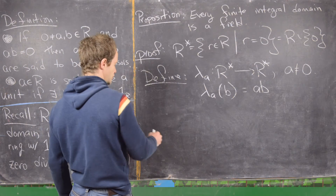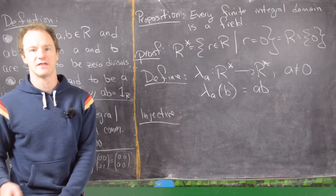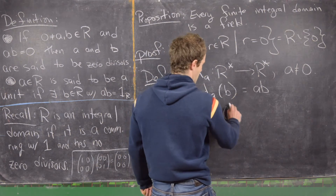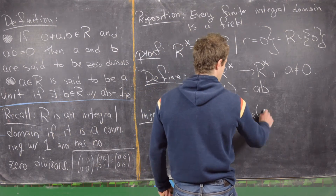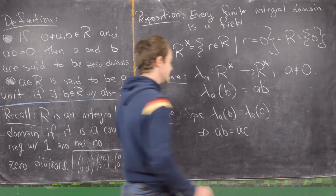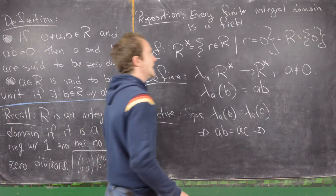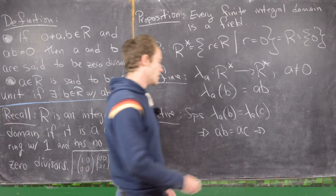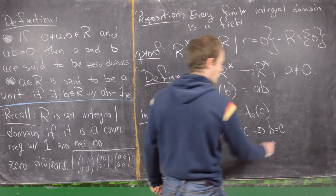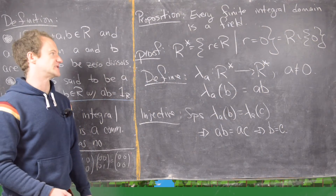We want to show this map is injective. Suppose λ_A(B) equals λ_A(C), which is the same as AB equals AC. By our previous proposition, since R is an integral domain, this implies B equals C — which is exactly what injectivity requires.